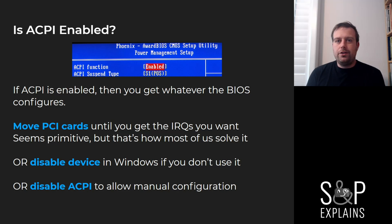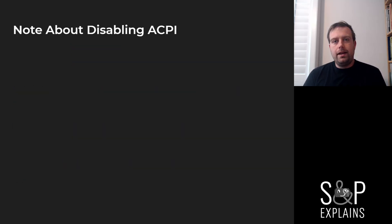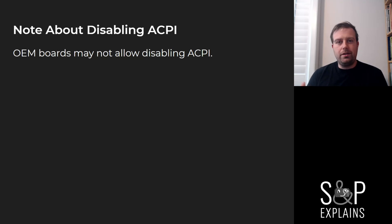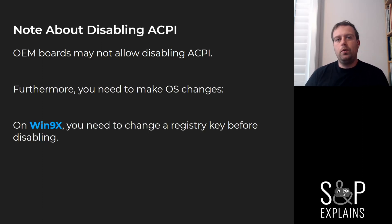The downside of disabling ACPI is you're turning off modern power management, so there's a cost and I would consider this a last resort. There are a few notes before you go about doing that. One is it's a BIOS option — you have to have that option. Some OEM boards might not let you, and then you're just stuck. You also have to think about your operating system and how it's going to handle that.